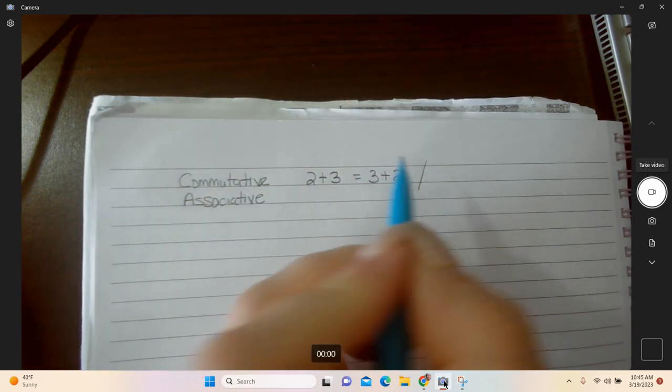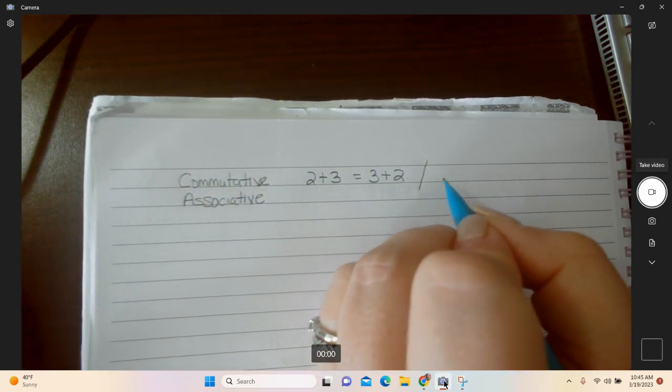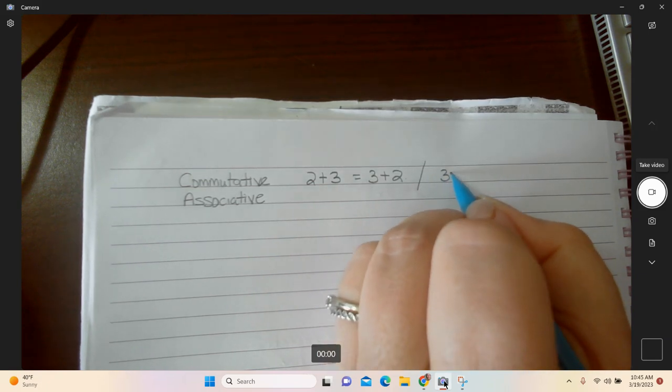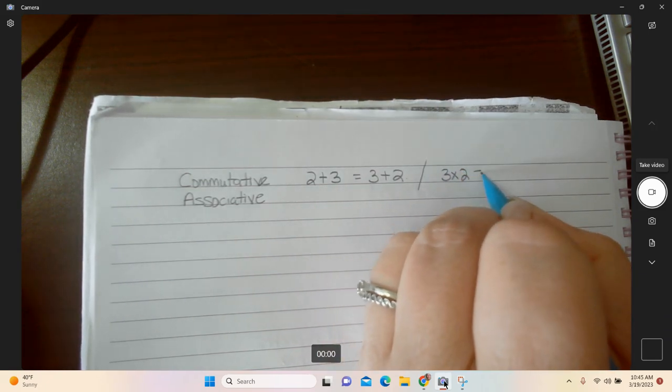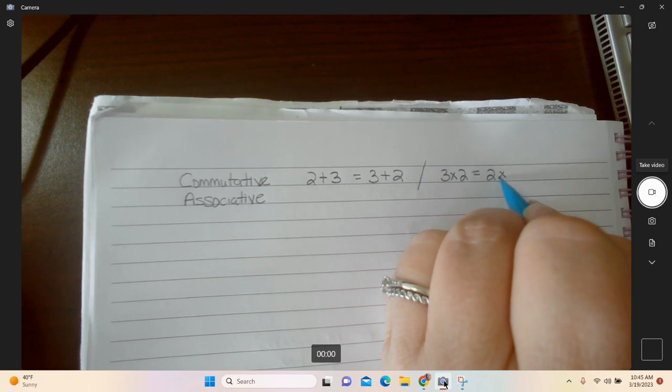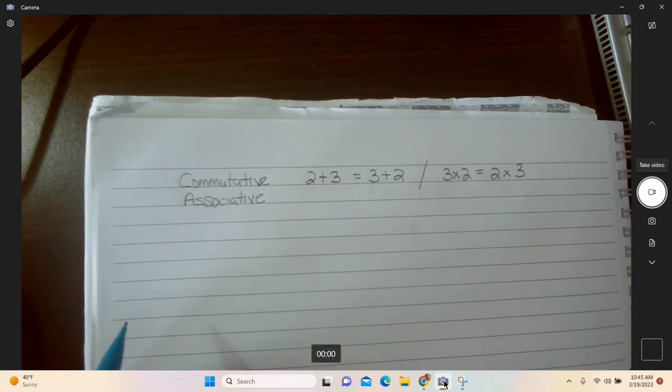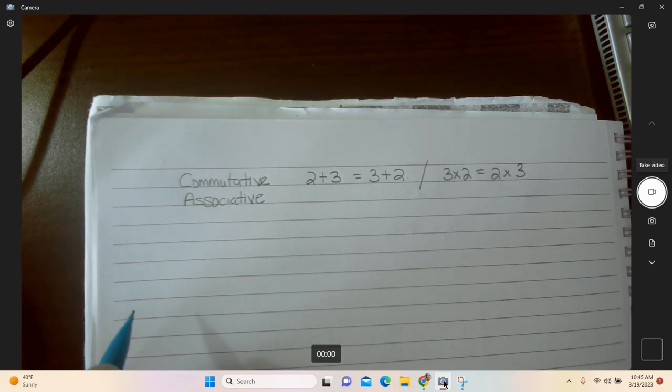You can change the order of how you do things when you're adding and you can also change the order of how you do things when you're multiplying. Three times two is the same as two times three. That's as simple as you can get. Now we all know also that when you're dividing and when you're subtracting, the order does make a big difference, but for adding and multiplying, you can switch things around.